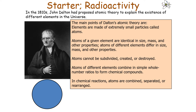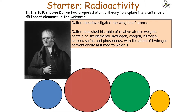In the 1810s, John Dalton proposed the atomic theory to explain the existence of different elements in the universe. The main points of this theory were: elements are made of extremely small particles called atoms; atoms of a given element are identical in size, mass and all other properties, but atoms of different elements differ in size, mass and other properties. Atoms cannot be subdivided, created or destroyed, but atoms of different elements can combine in simple whole number ratios to form chemical compounds, and in chemical reactions atoms are combined, separated or rearranged. Dalton then investigated the weight of these atoms and published a table of the relative atomic weights.